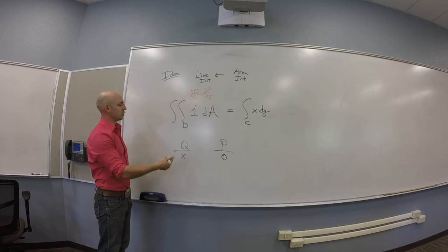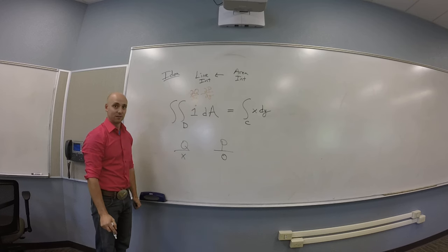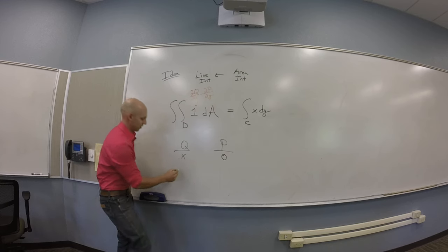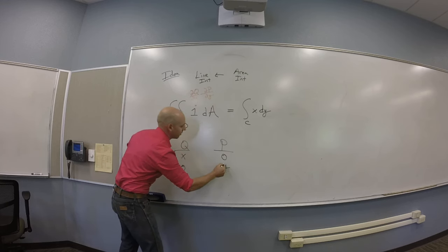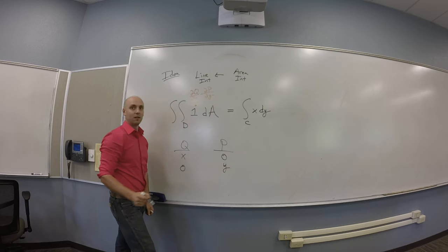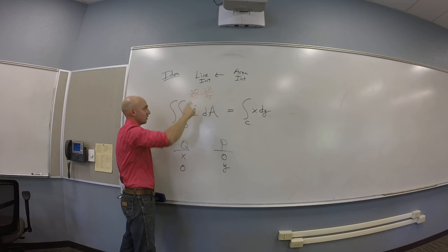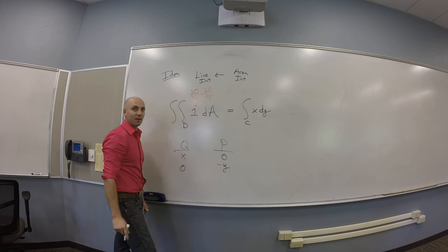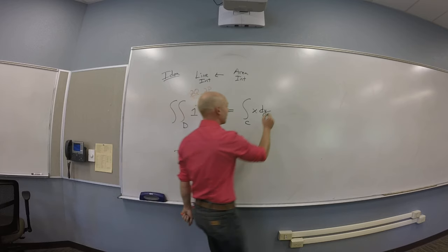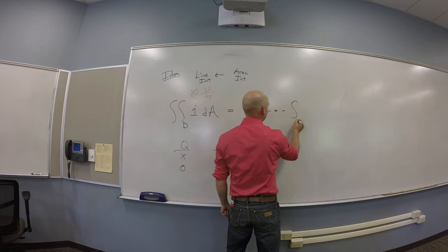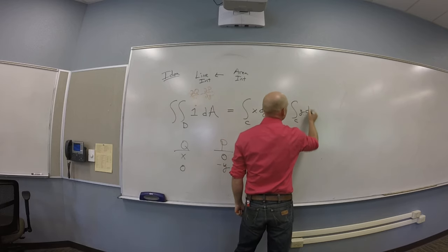What's another choice you could make here? The other way around. Kind of the other way around. So if you do zero and Y, what do you get? Y dx. But zero and Y doesn't actually work up here. You need a negative Y. So apparently this is also minus the integral over C of Y dx.